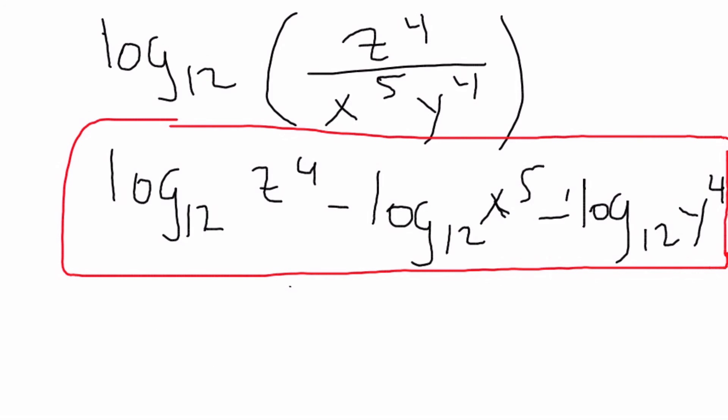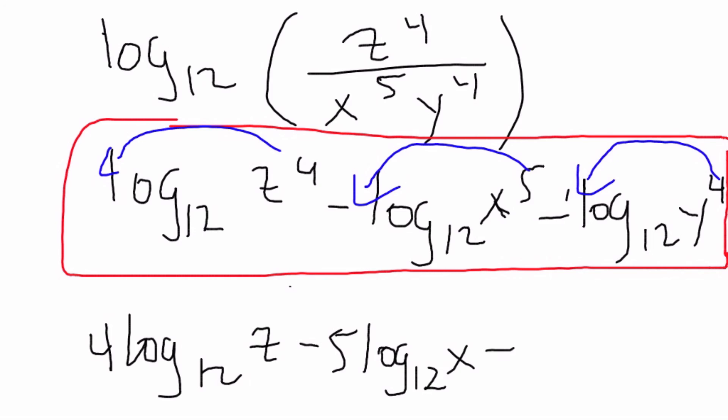So, now, once again, going back to this equation, we're just going to take everything and move it back. So, we have 4 log base 12 of z minus 5 log base 12 of x minus 4 log base 12 of y. So, that completes today's lesson. Please come back for the solving of logarithmic equations. Thank you.